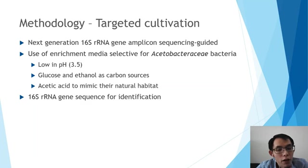In this analysis, high bootstrap values were obtained, showing that the phylogeny of the family was well-resolved. Strain F3b2 and all the type strains of family Acetobacteraceae also share values lower than the proposed species threshold for average nucleotide identity, in silico DNA-DNA hybridization, and average amino acid identity. This shows that strain F3b2 does not belong to any of the current taxa in the family Acetobacteraceae.